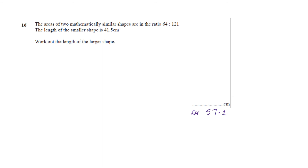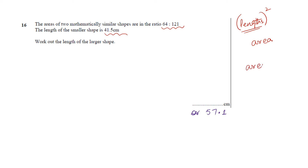The areas of two mathematically similar shapes are in the ratio 64 to 121. The length of the smaller shape is 41.5 cm. Work out the length of the larger shape. Remember: if area is given and you want to find the length, you take the square root of the area to determine the length.